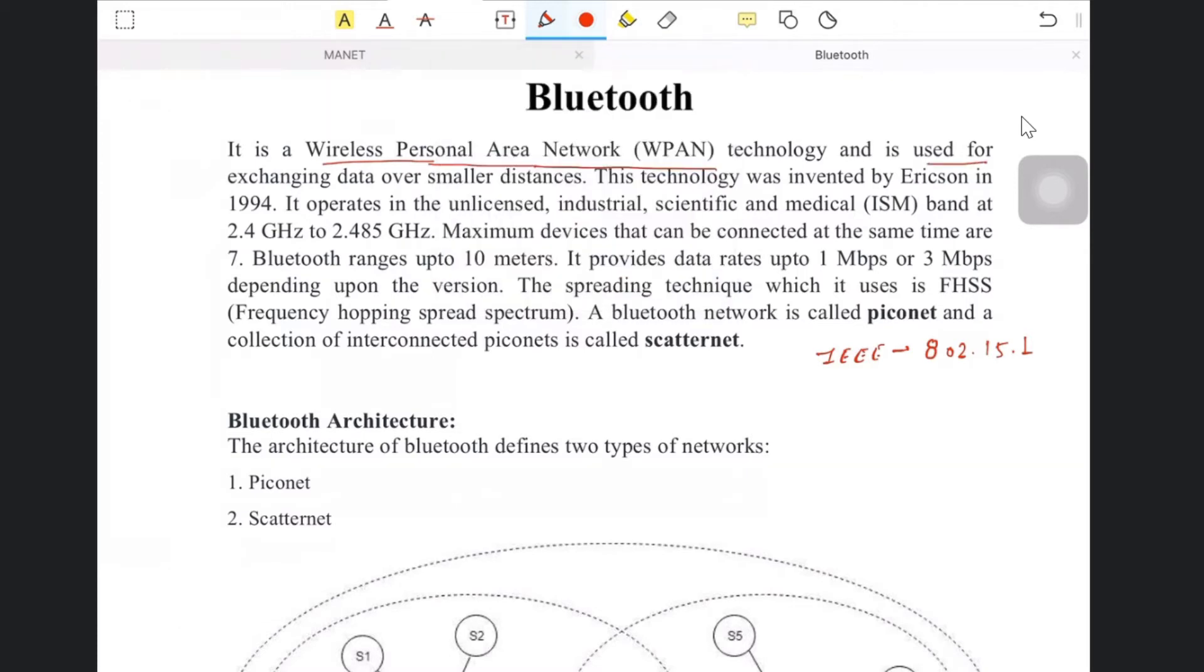This WPAN technology is used for exchanging data over smaller distances. The first constraint is distance—you can send and receive data up to 10 meters.